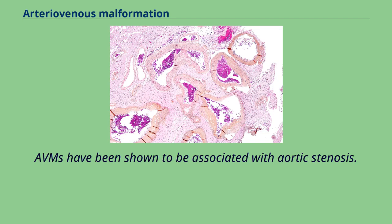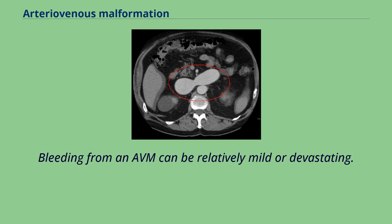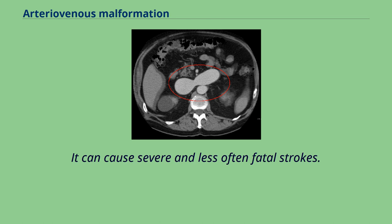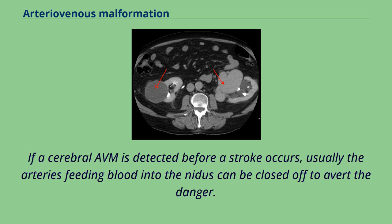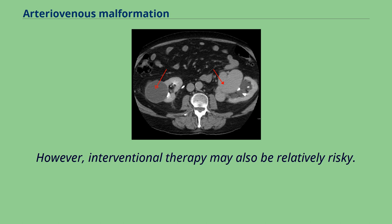Bleeding from an AVM can be relatively mild or devastating. It can cause severe and, less often, fatal strokes. If a cerebral AVM is detected before a stroke occurs, usually the arteries feeding blood into the nidus can be closed off to avert the danger. However, interventional therapy may also be relatively risky.